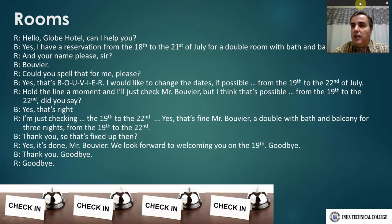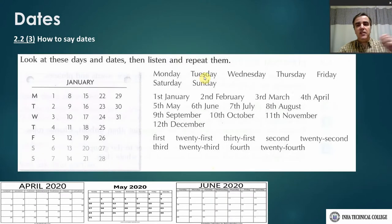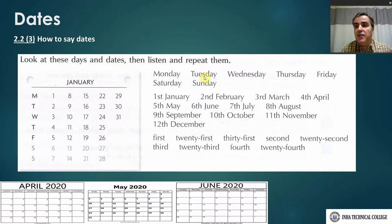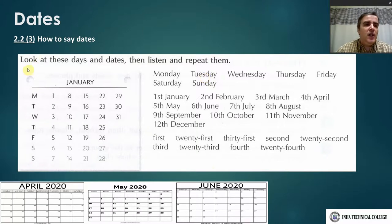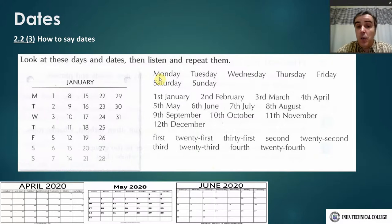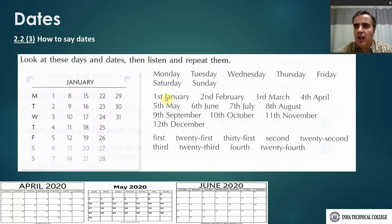Now let's talk about dates, as a lot of people have some trouble with them. It's very different in different languages — I know in Korean the way people give dates is very different from English. We have the seven days of the week: Monday, Tuesday, Wednesday, Thursday, Friday, Saturday, Sunday. These are really important because sometimes people get mixed up, and by using the day before the date it can make things a lot clearer.